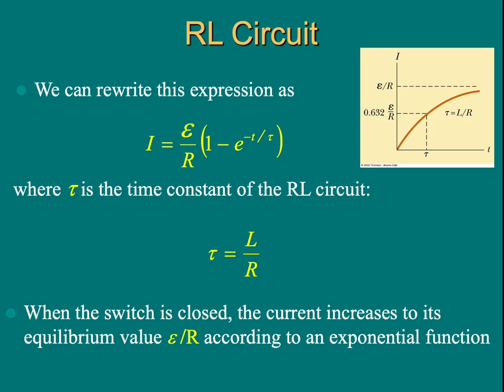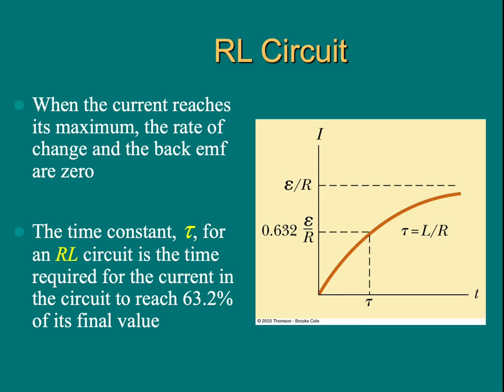When the switch is closed, the current increases to its equilibrium value, epsilon divided by R, following this exponential function. When the current reaches its maximum, the rate of change and the back EMF are zero.